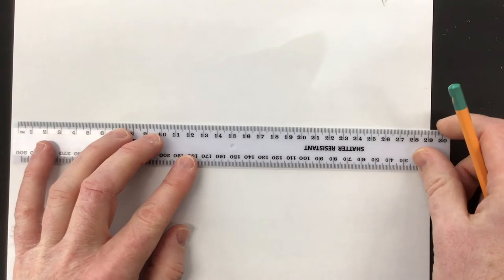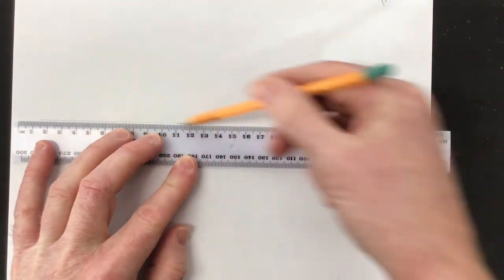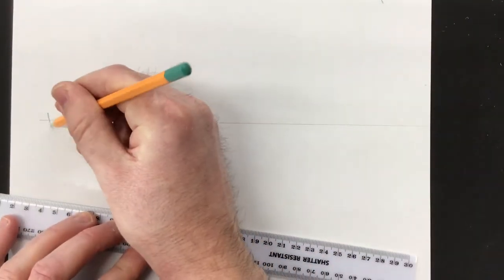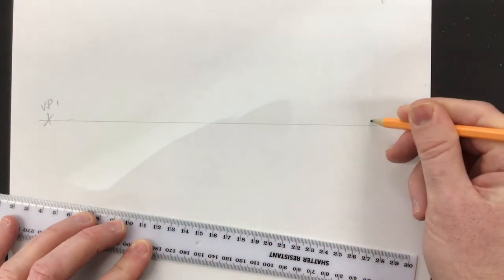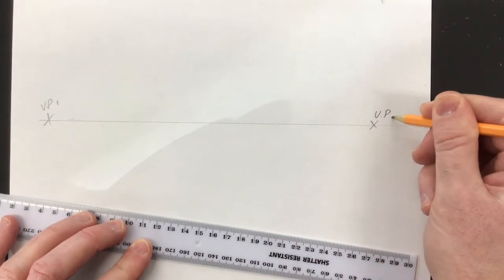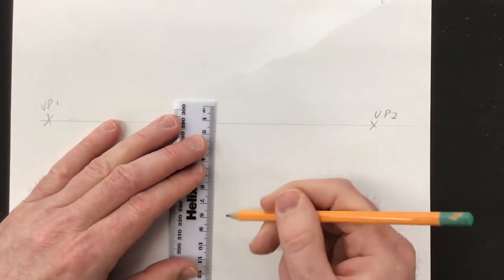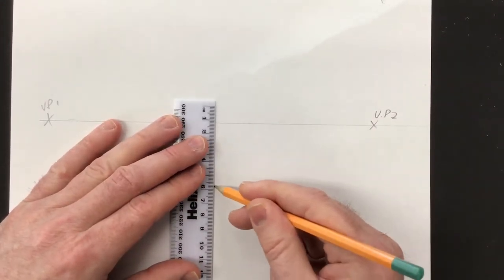The starting point, as always in two-point perspective, is to draw your horizon line and label up your vanishing points VP1 and VP2. Remember, sharp pencil using the ruler, keeping all your verticals at 90 degrees to start.